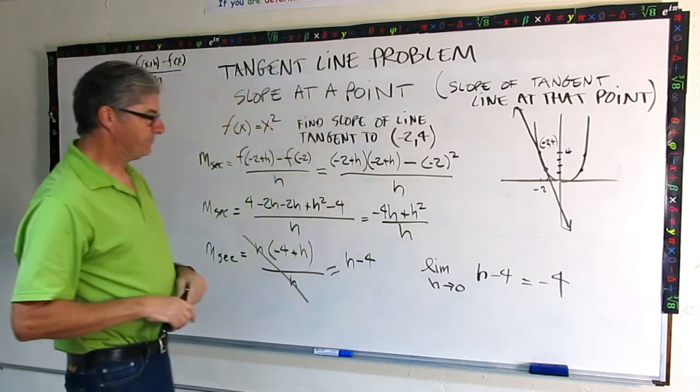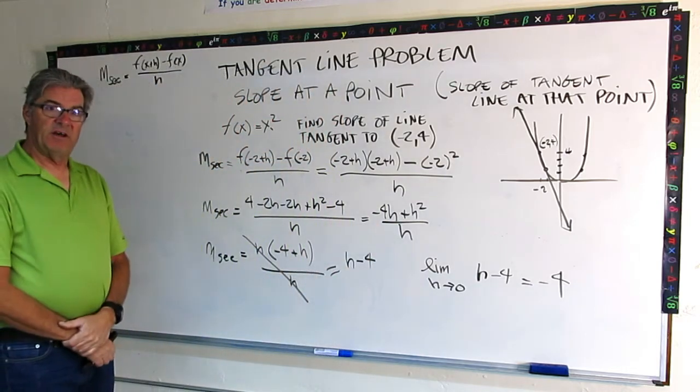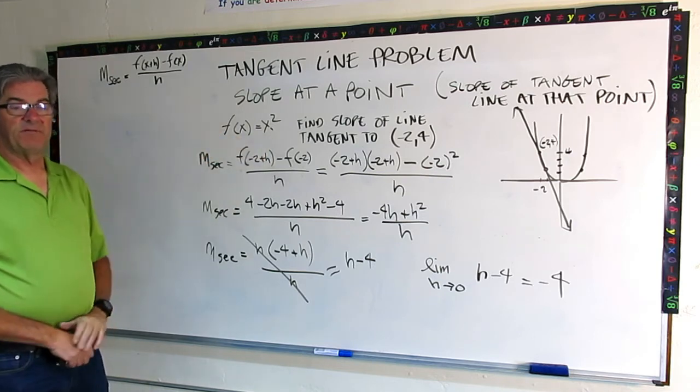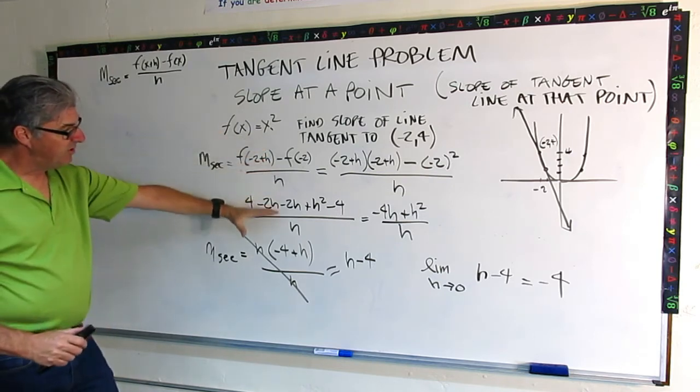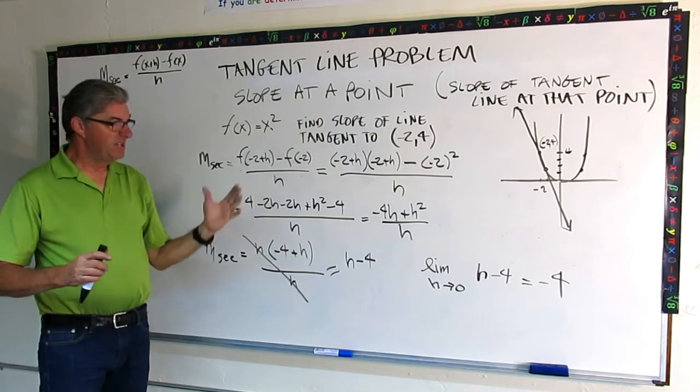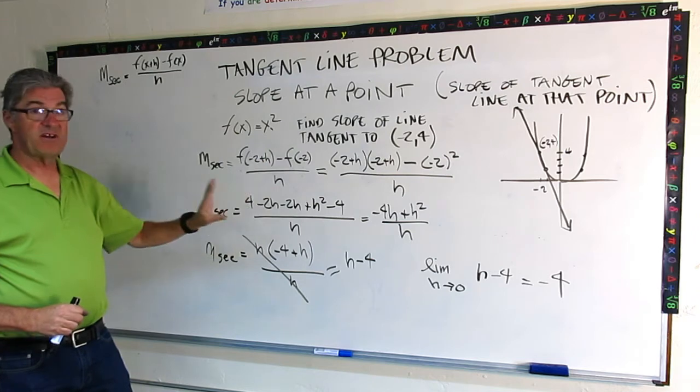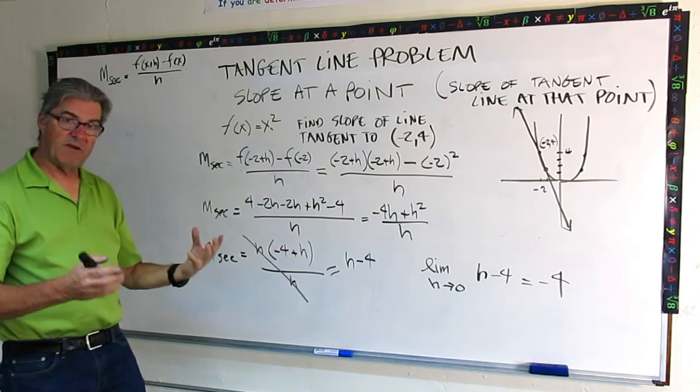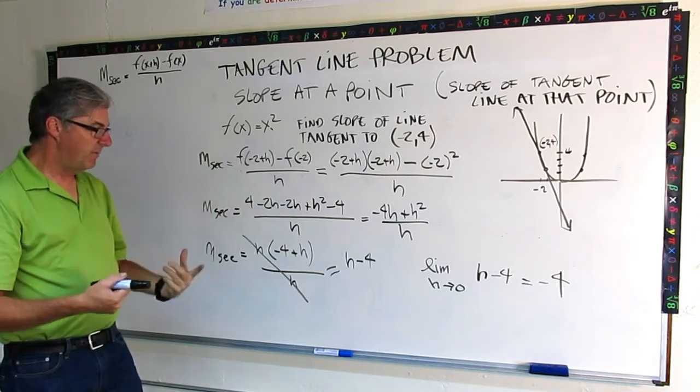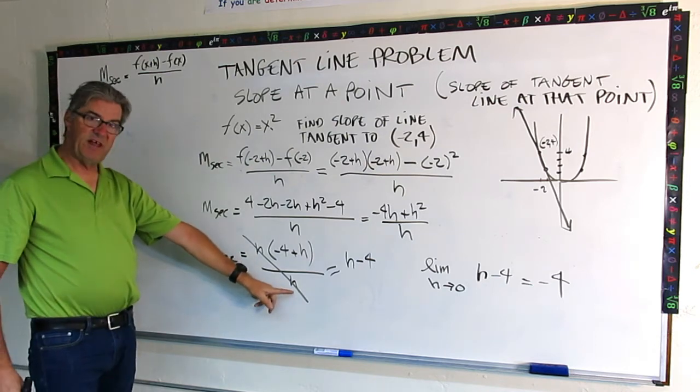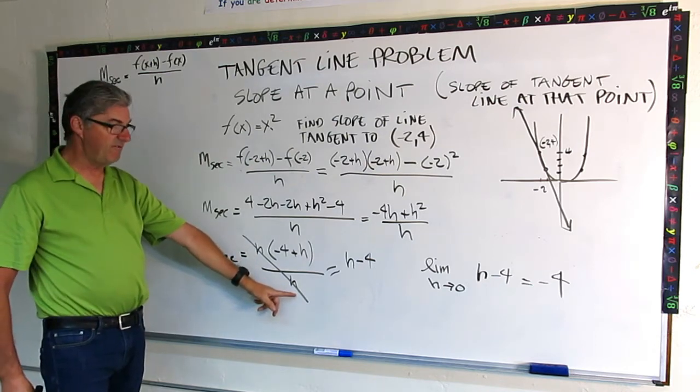So there you go. That's a practical problem using a simple quadratic function to find the slope of the tangent line. And again, this algebra is super important. It's nitpicky. There's a lot of steps. And this is a simple function. They get harder. So just be really careful with your record keeping. And remember that what you're shooting for is a final product where you can cancel out that bottom h so you can evaluate the limit.